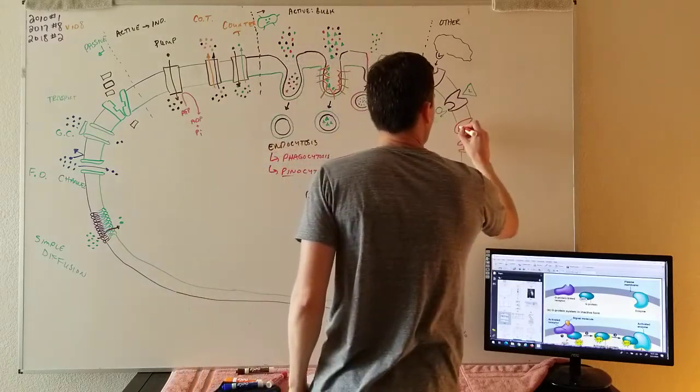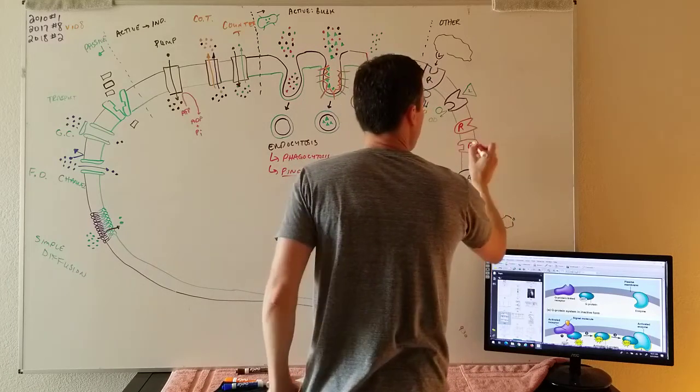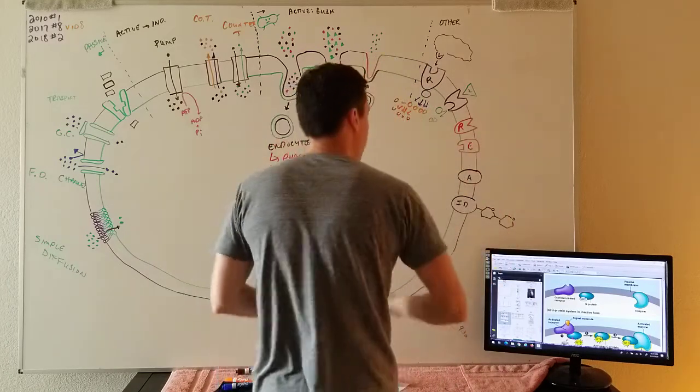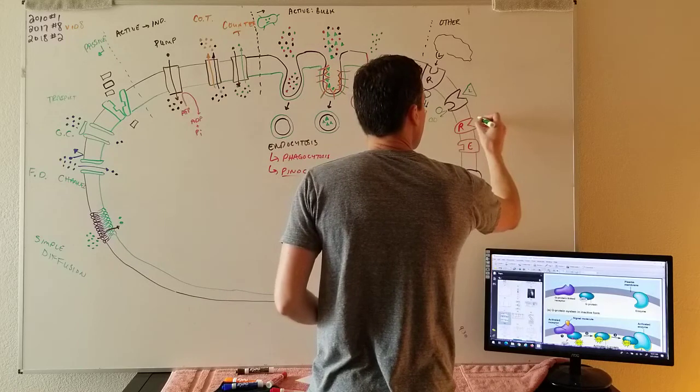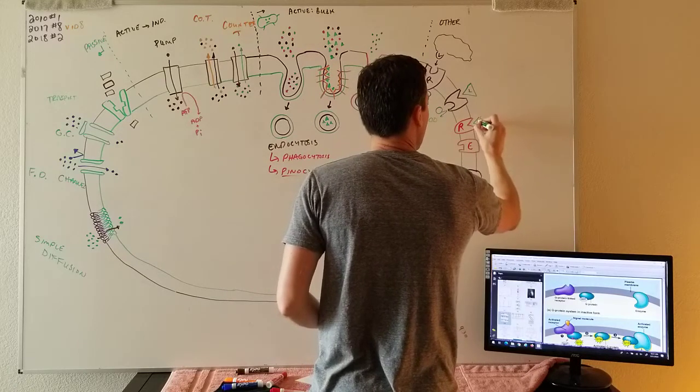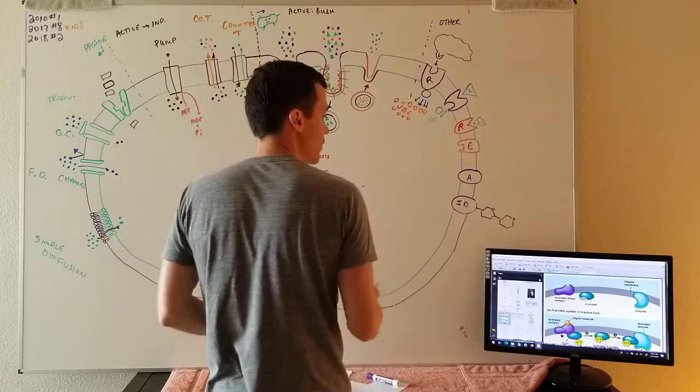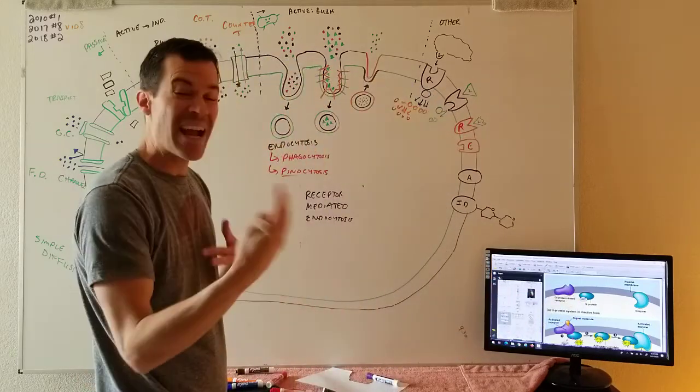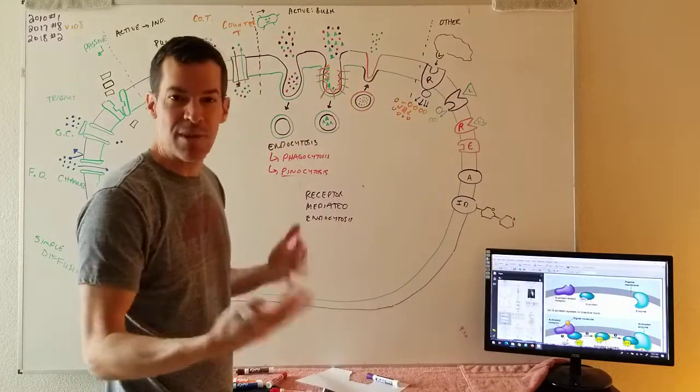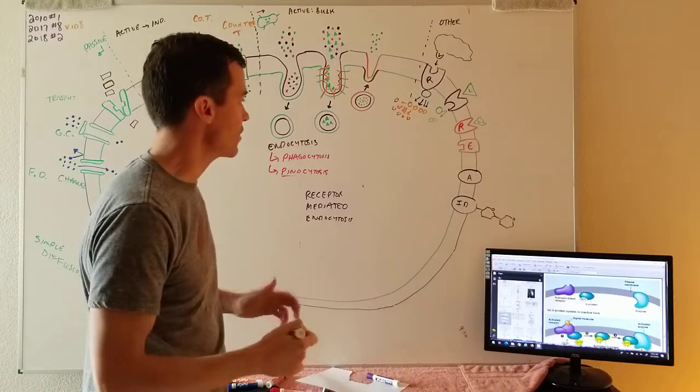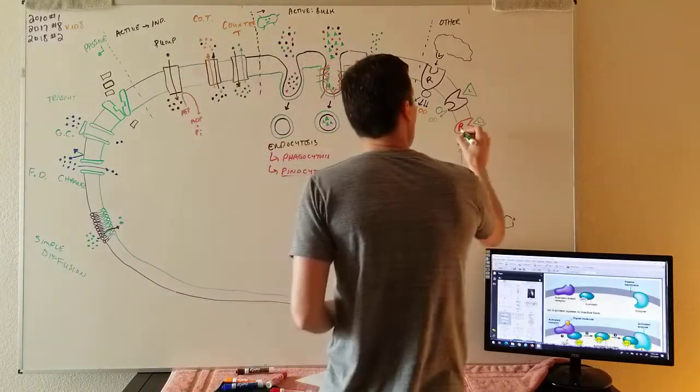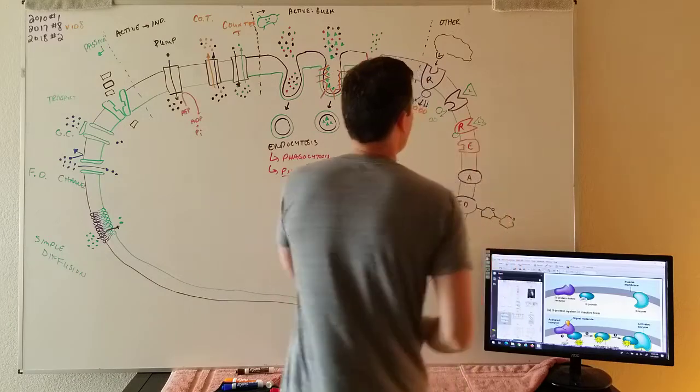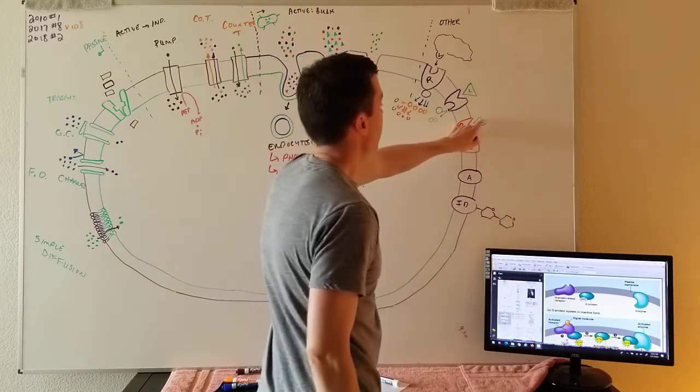Here I break it down: I have the receptor portion—I'll put an R—and then I have the enzyme portion. The way that it would work is if my ligand hits that receptor, there's this G-protein. That G-protein is activated and inactivated with GTP, so that's why they call it a G-protein.